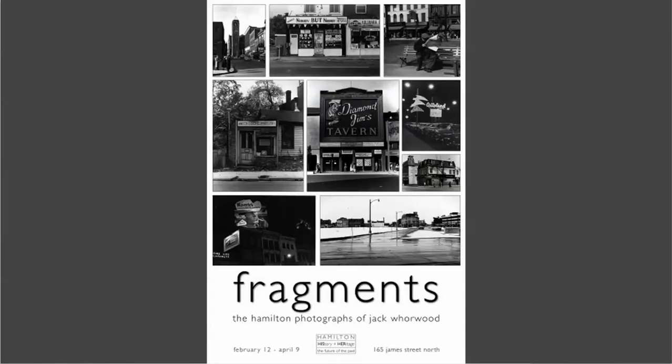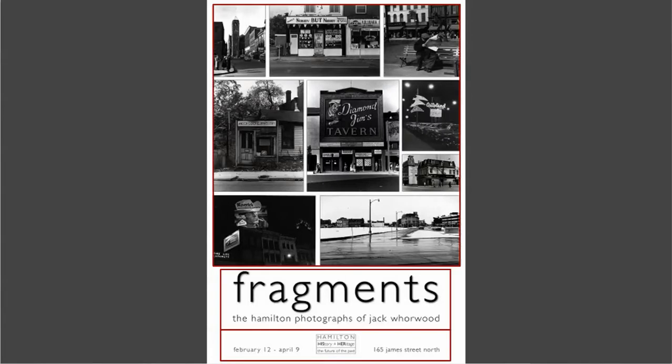In this design example, we're using similarity to group. The photos at the top are all black and white rectangles — that's clearly one thing, so we see a collage instead of separate pictures. Then 'Fragments, the Hamilton photographs' is in the same typeface as text, so it has two similarities and we see that as a group. At the bottom, some white space separates another group.